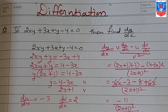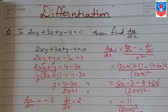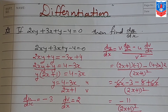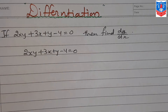Good morning students. Welcome to the 7th session of Chapter 5, that is Differentiation. In today's session, we will do two types of sums: special sums, and sums based on the second order derivative. Let us start with the first sum.